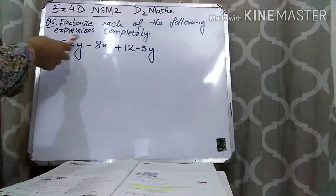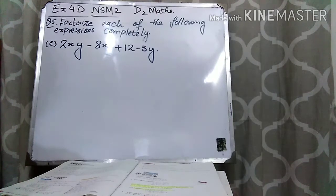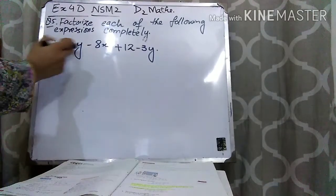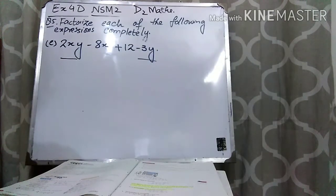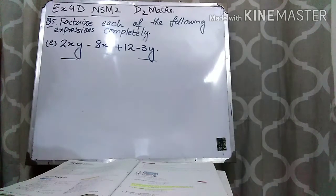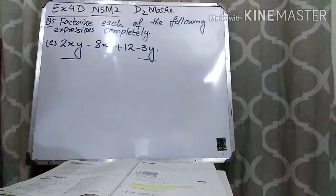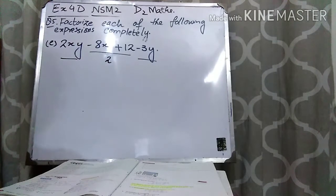Part E is 2xy minus 8x plus 12 minus 3. Here you can see that in the first and the last term, the variable y is common. Basically what we need to do is we have to make the brackets common. So if we take y common from the first and last term, we will get 2x minus 3. In the same way, if I am taking 2 common from the middle two terms, I will get the same bracket.